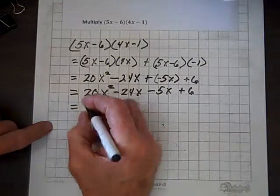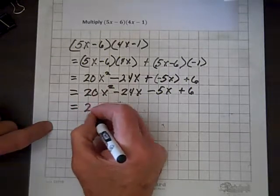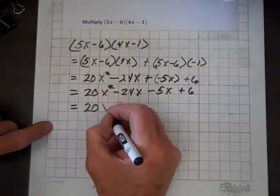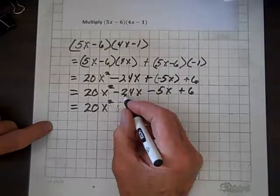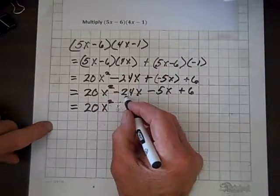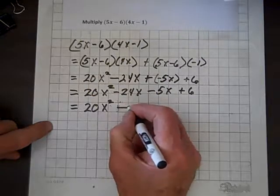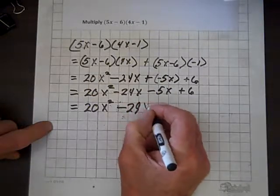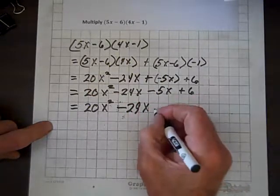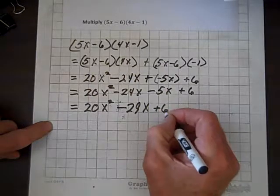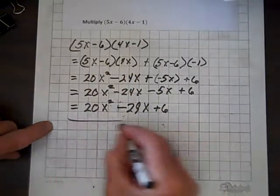So now let's gather up like terms, and there's only one term with x squared in it. But here we have two like terms, so negative 24x minus 5x is negative 29x, and finally we have our friend Mr. 6 there, and that's a plus 6, and we're done.